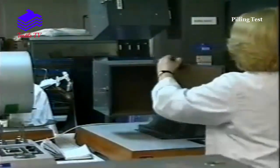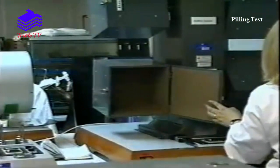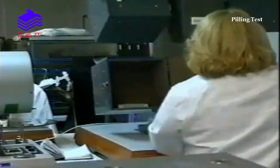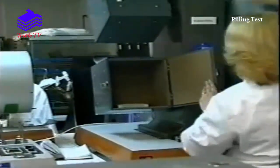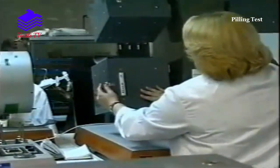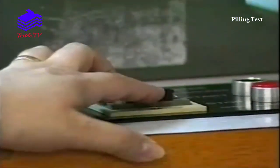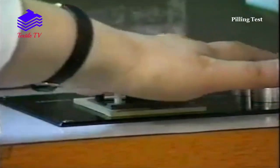The pilling box is cleaned out and 4 mounted specimens placed in each box. The counters are set to the specified number of revolutions and the machine switched on.